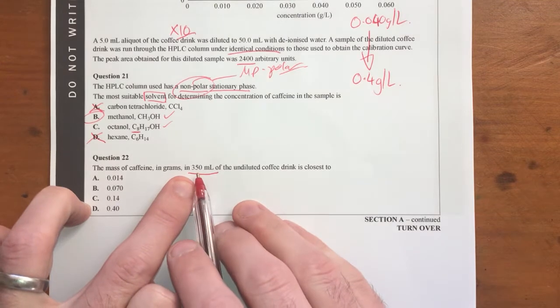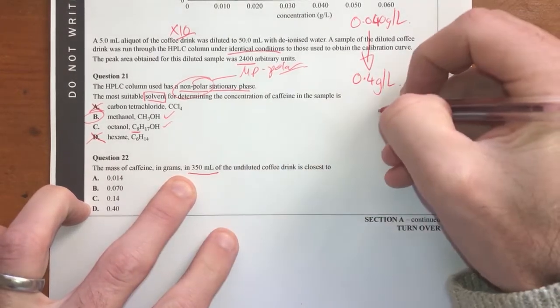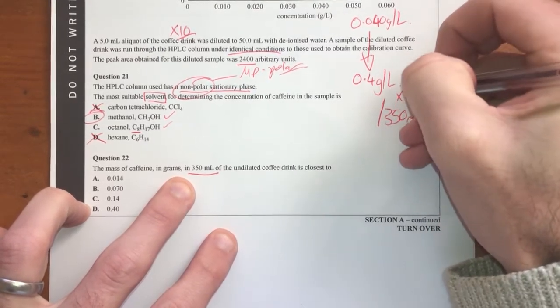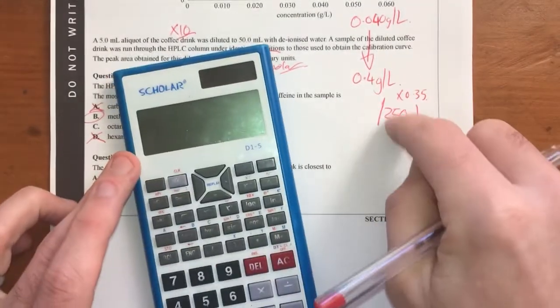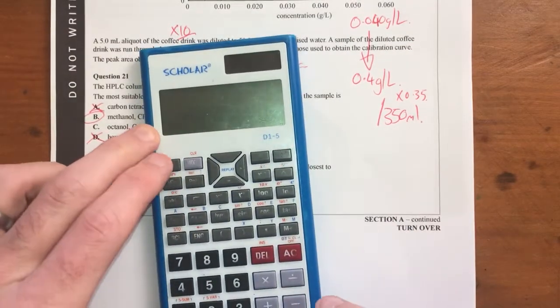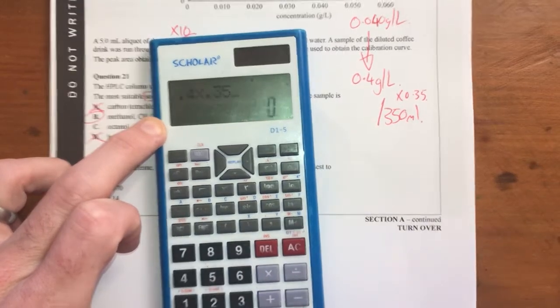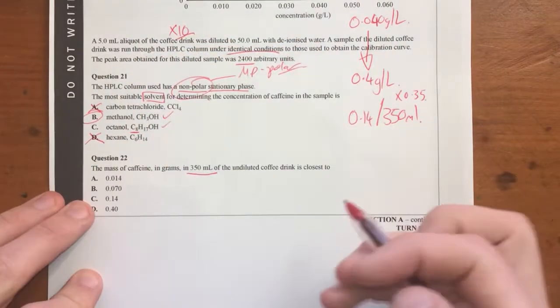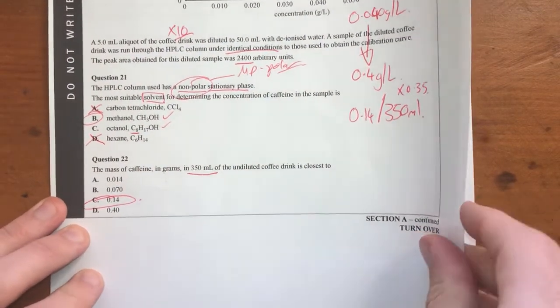I need this amount in 350 ml. So therefore, if that's in litres, I need to be per 350 ml. So I'm going to times that by 0.35. So 0.4 times 0.35 gives me 0.14. So my answer here is going to be C, which is good. Moving right along.